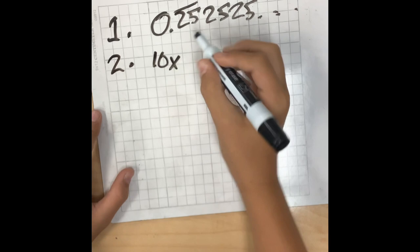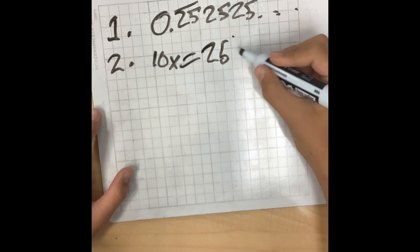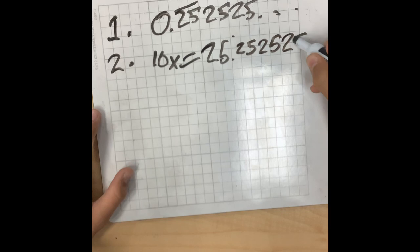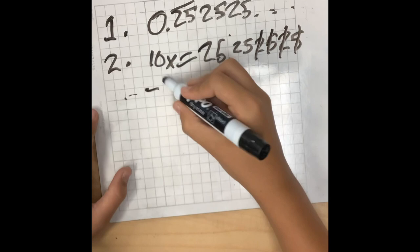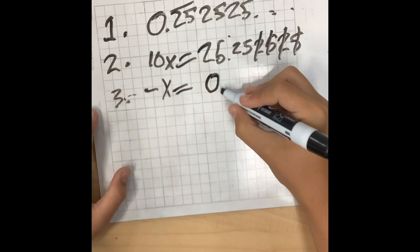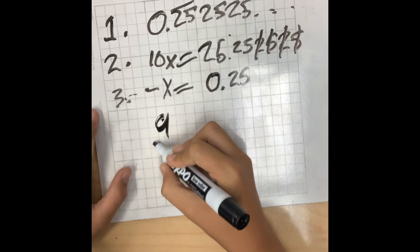You drop it down and do 10X which gets rid of most of the repeating two fives and you're left with 2.5, 2.5. Then on step 3, you minus out 2 of the 2.5s, so it becomes 0.25.